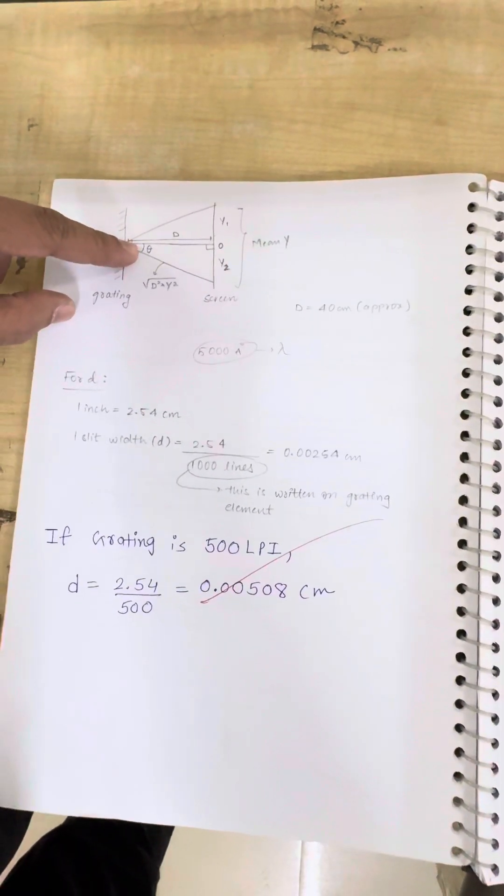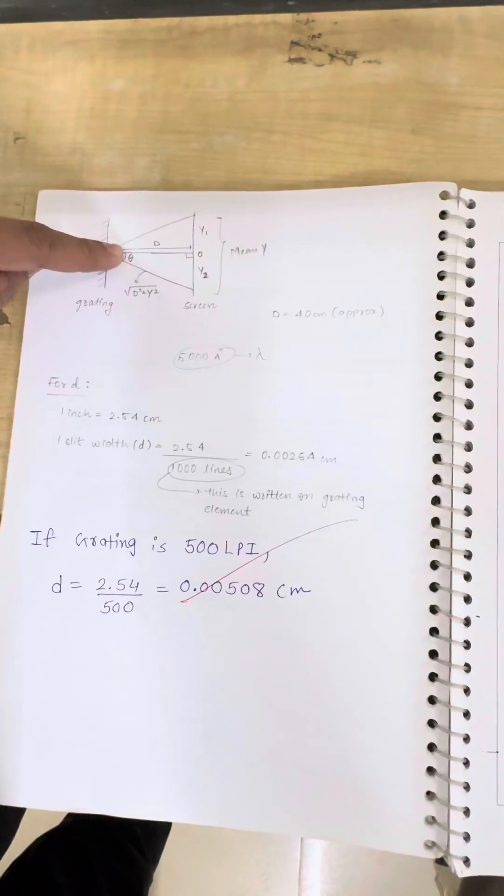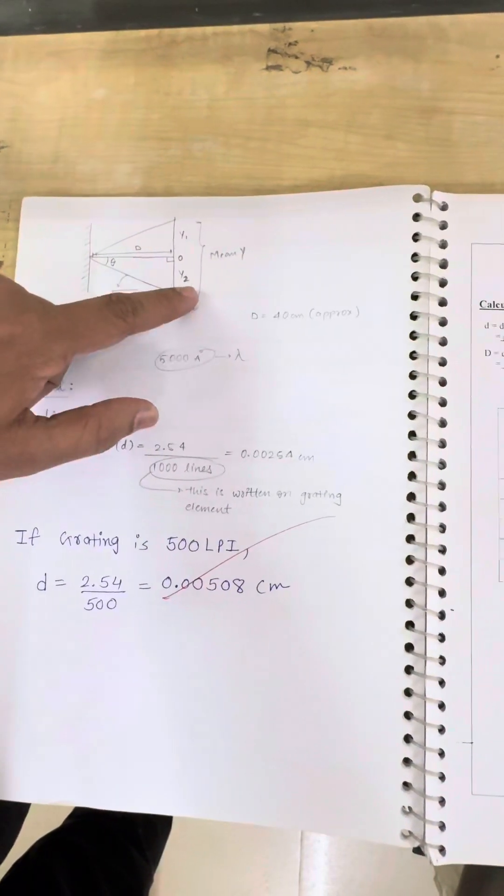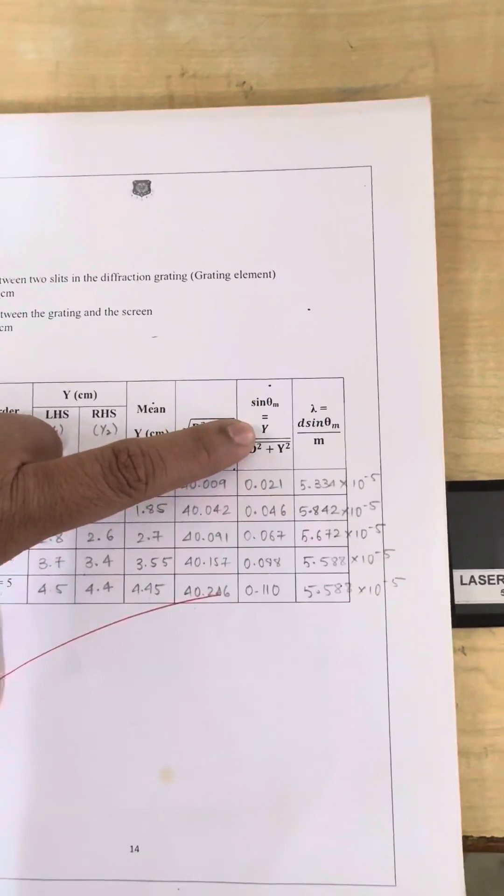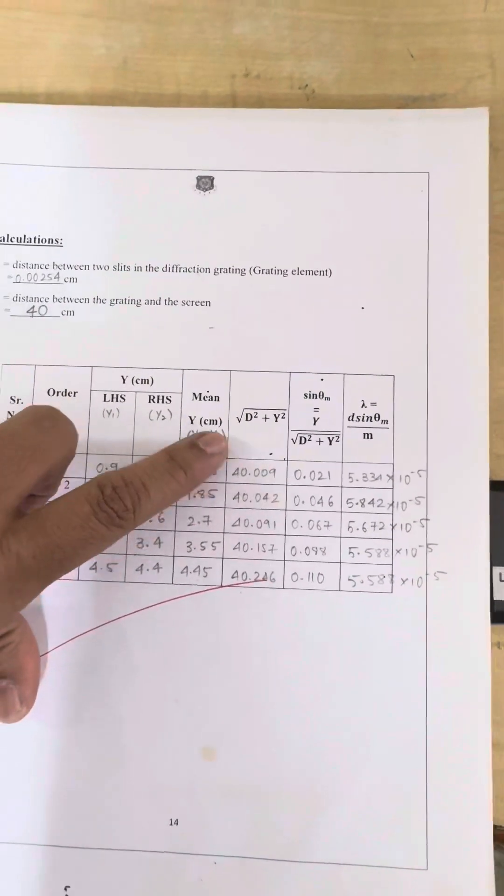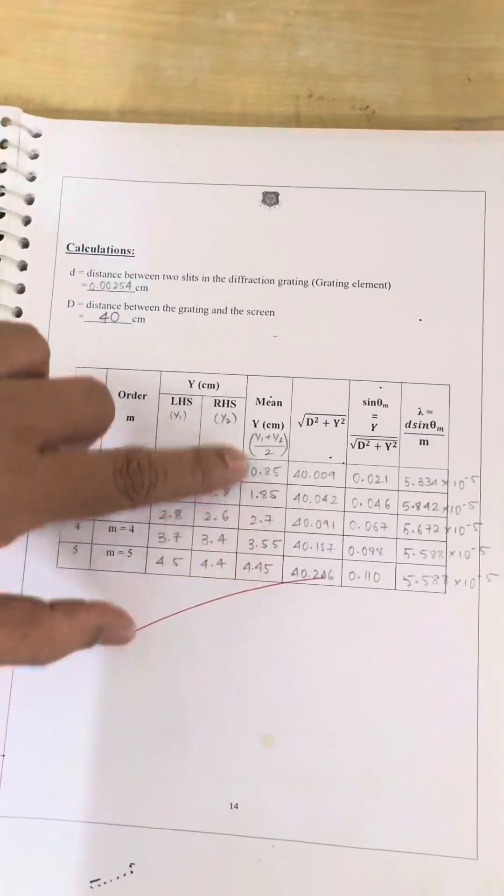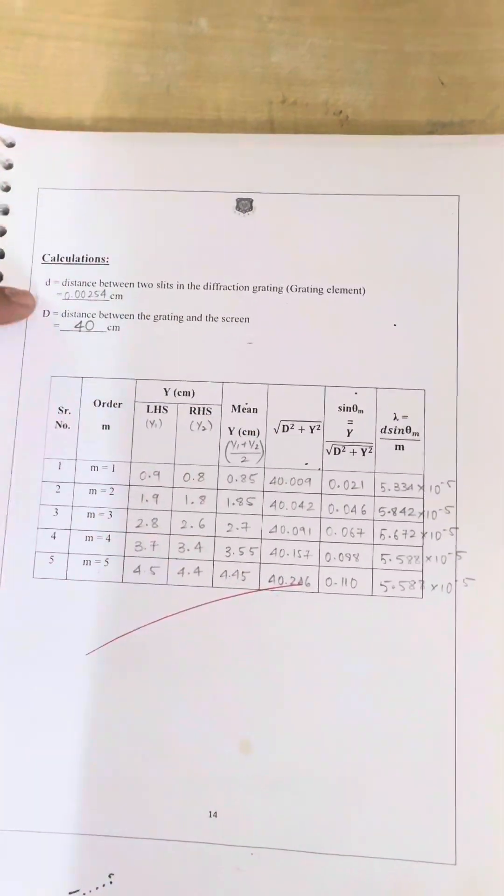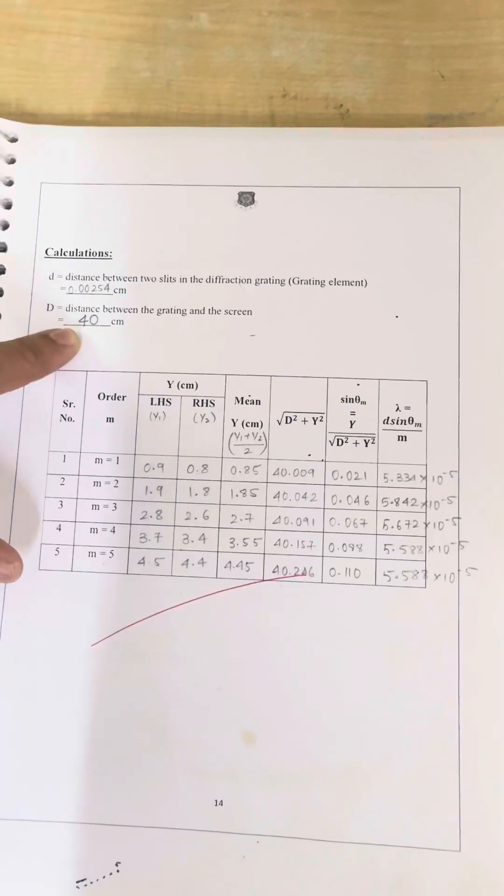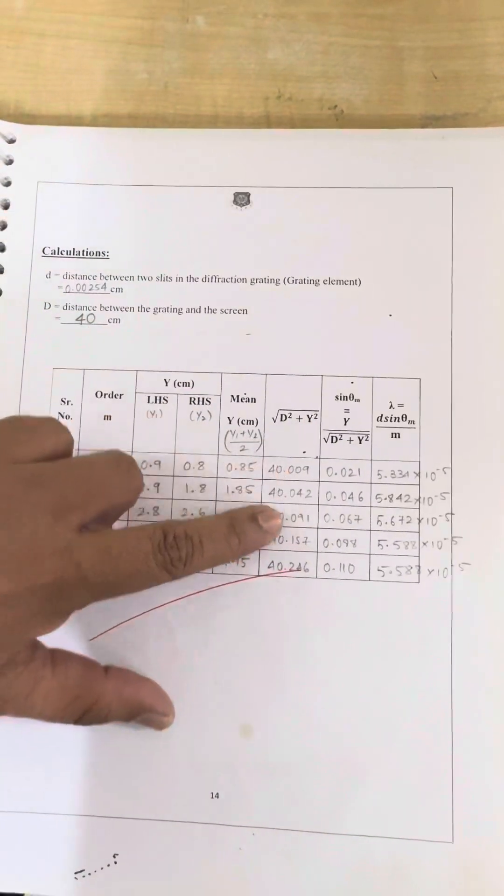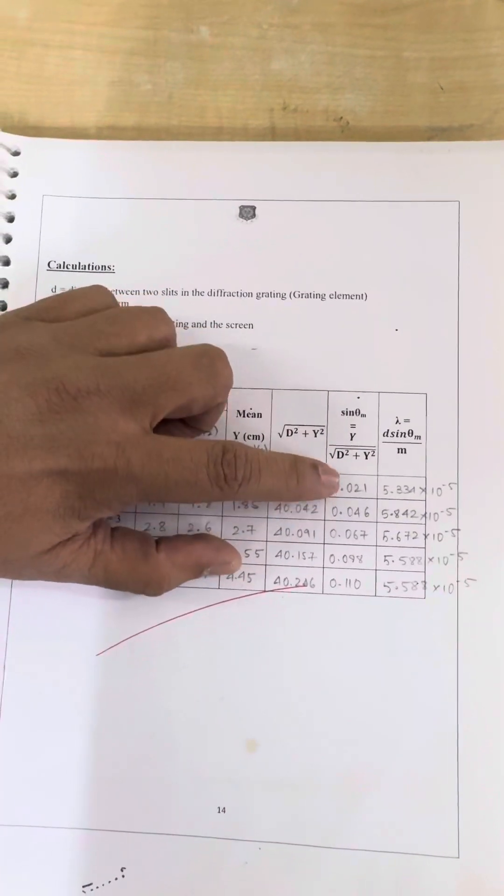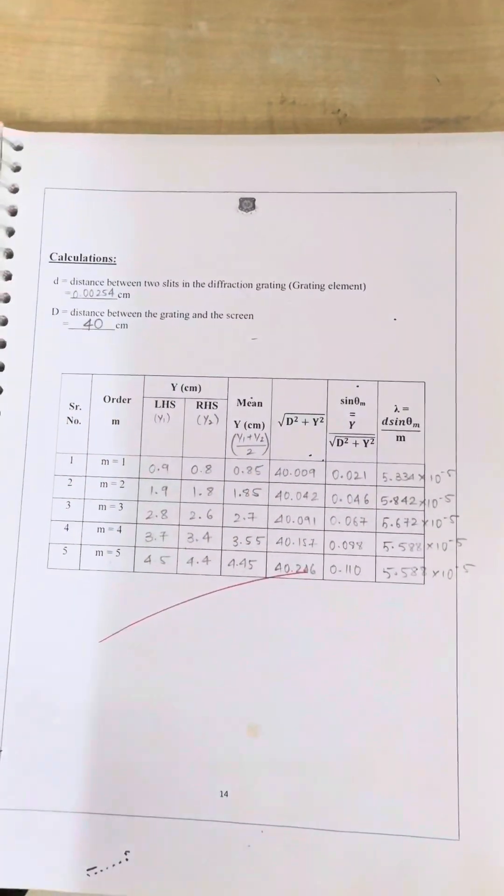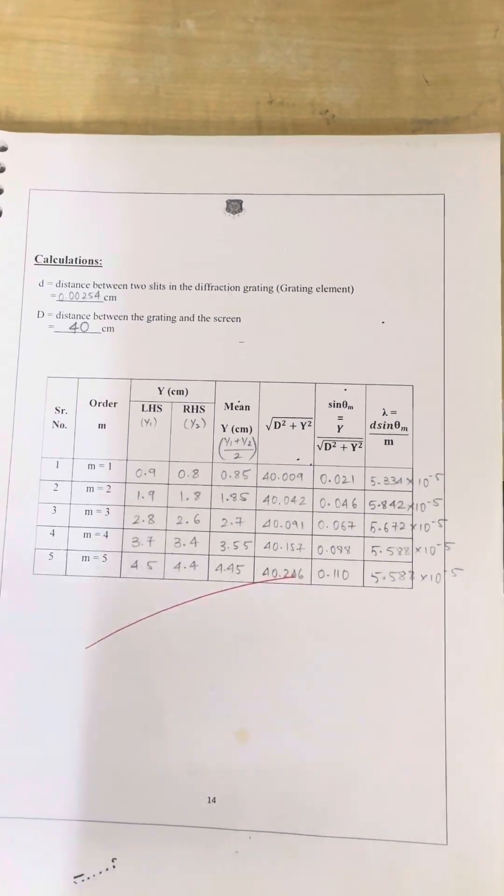So for this theta, if we calculate sin theta, sin theta is equals to y divided by under root d square plus y square. Y is nothing but the distance, this mean distance you observe. Capital D is nothing but this distance, 40 centimeter. So you can calculate under root d square plus y square for all 5 readings. Also, you can calculate the sin theta for all 5 readings. Then by using this formula,